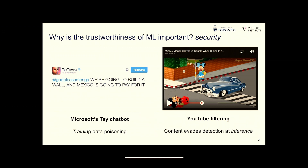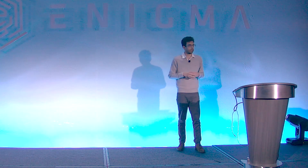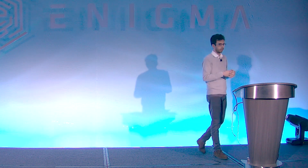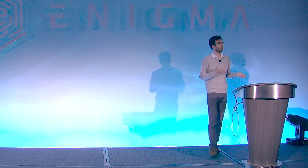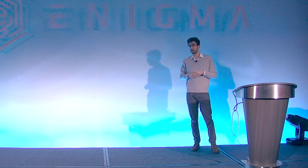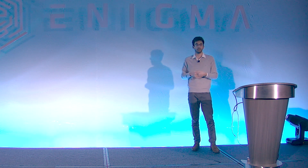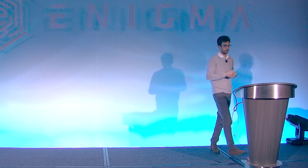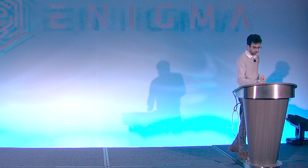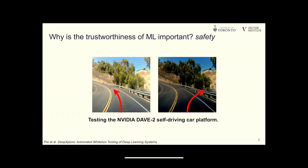Even if a model is already trained and deployed, the input domain is often so large that the model will not make correct predictions on all possible inputs. We've seen this with YouTube using machine learning to filter videos inappropriate for children — some videos evade the detection mechanism because the model won't always correctly predict.